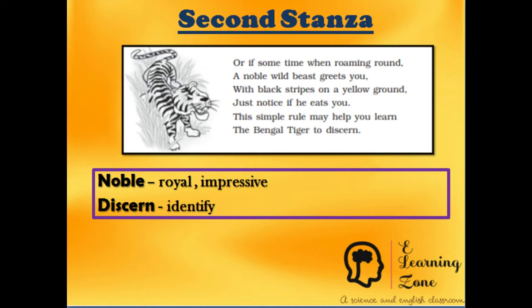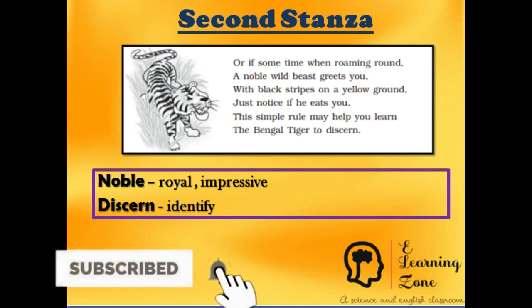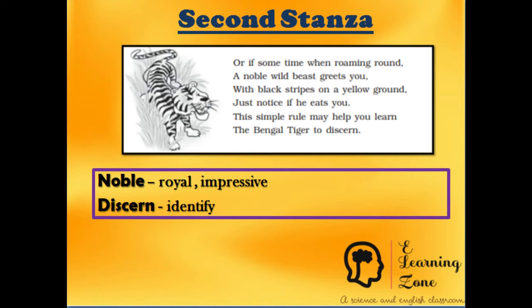Here the poet says that in the jungle there is an animal who belongs to the royal clan — the Bengal Tiger — who is just casually roaming around. The Bengal Tiger is a noble beast; his skin is yellow with black stripes. The poet says that if you happen to meet this animal, you should notice that he kills and eats you up. If he does so, you can without doubt recognize this animal as a Bengal Tiger.